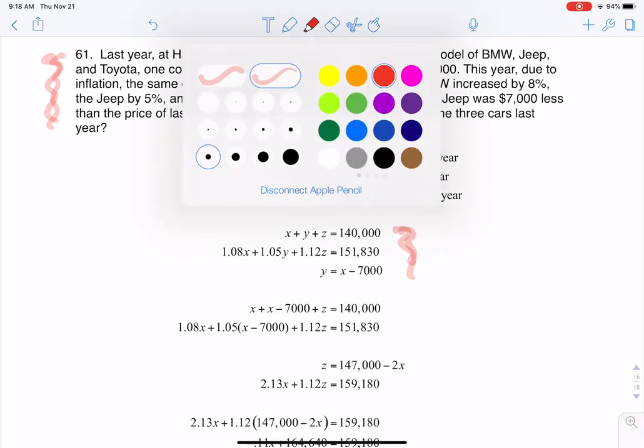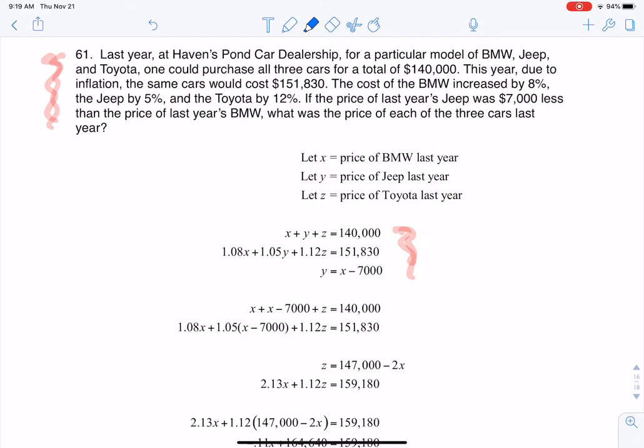Let's break this down. We'll do one equation at a time. Starting with a blue highlighter, it says last year at Haven's Pond Car Dealership for a particular model of BMW, Jeep, and Toyota, one could purchase all three cars for a total of $140,000. I want to highlight that phrasing because ultimately they're going to ask me the price of each of these cars.